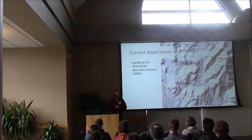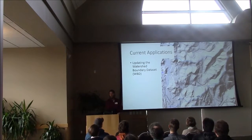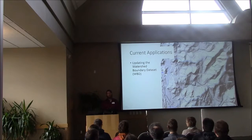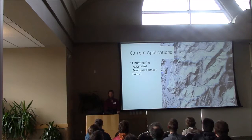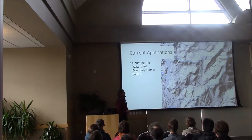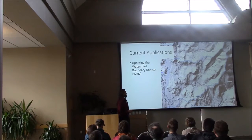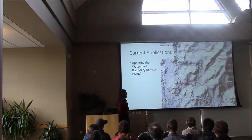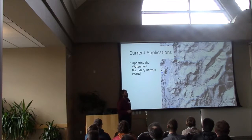Getting into current applications — how the White Mountain National Forest is using LiDAR data right now. One example is we've contracted with the US Geological Survey to update the Watershed Boundary Dataset. The Watershed Boundary Dataset is part of the NHD, the National Hydrography Dataset. Any time you use GIS and you throw a watershed on there, this is what it is. Using LiDAR, we can really refine these boundaries. What's shown now is the current Watershed Boundary Dataset derived from topo maps, and you can see some areas where it's not exactly following the topography.